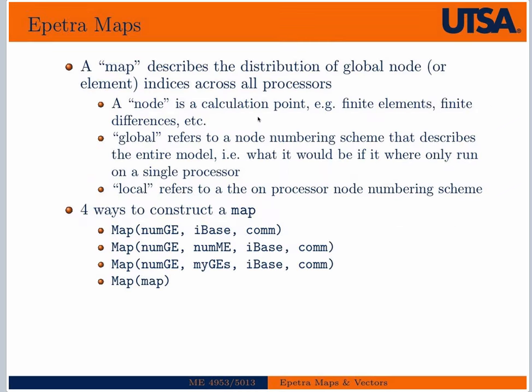So what is a map? A map describes the distribution of global node indices across all processors. I use the word node here, but in the setting of finite elements this may be an element. It's just some mapping from a global node system or a global element system — in general, a global numbering system — to a local one.